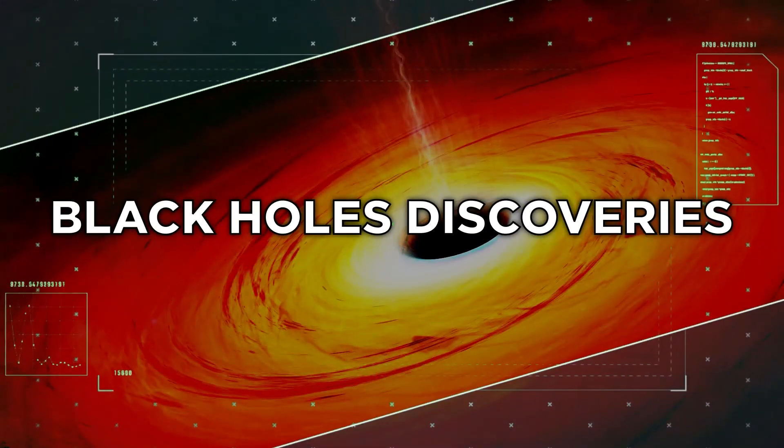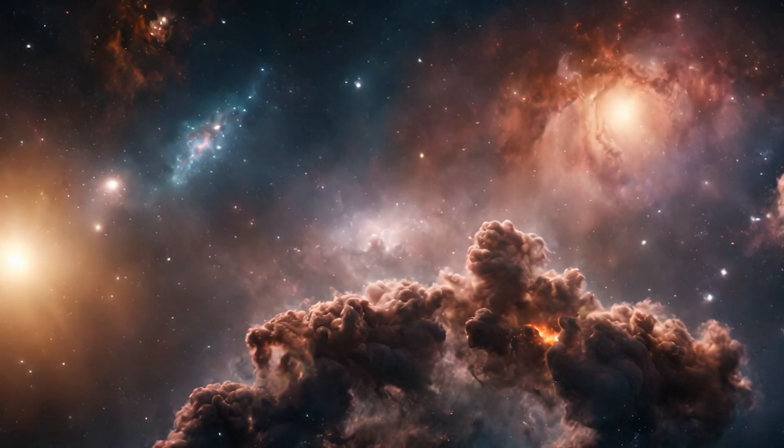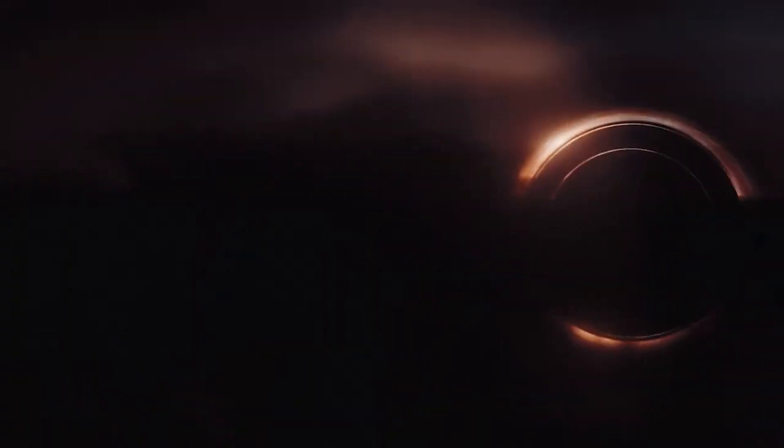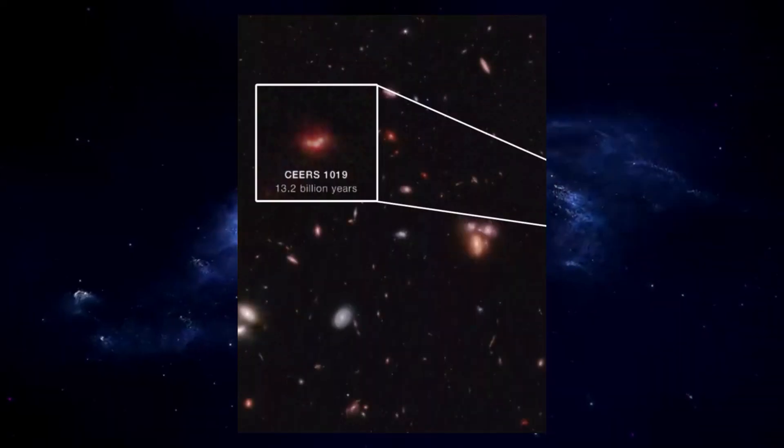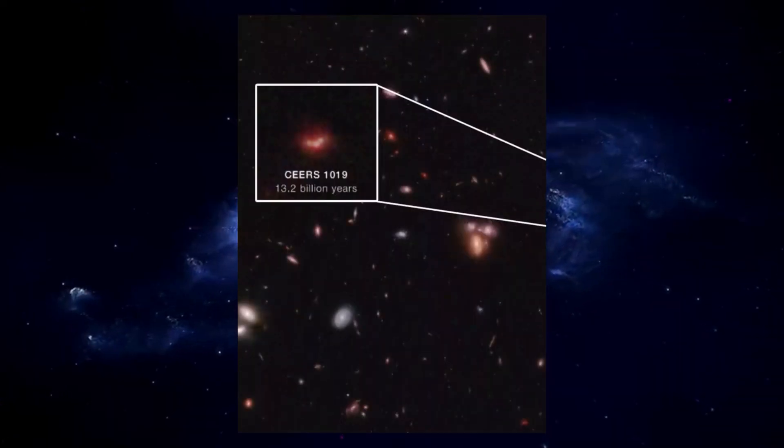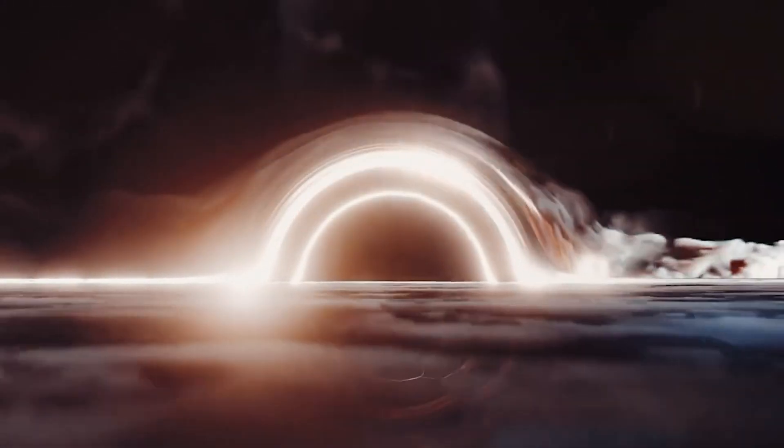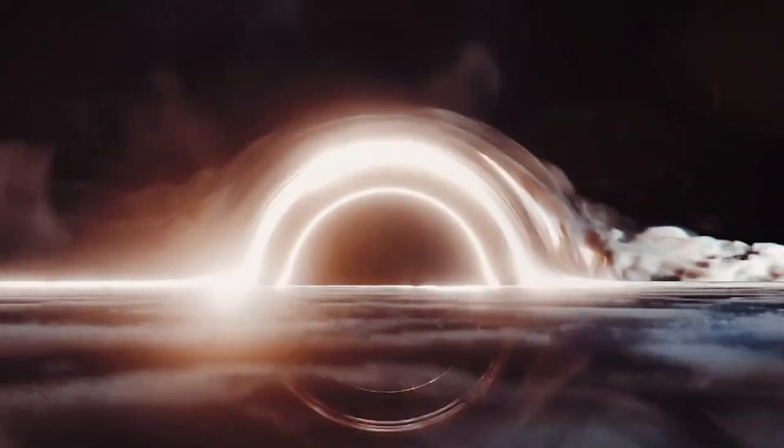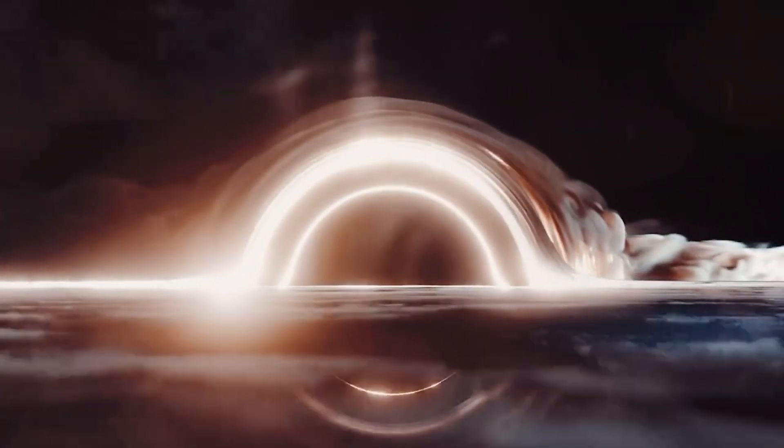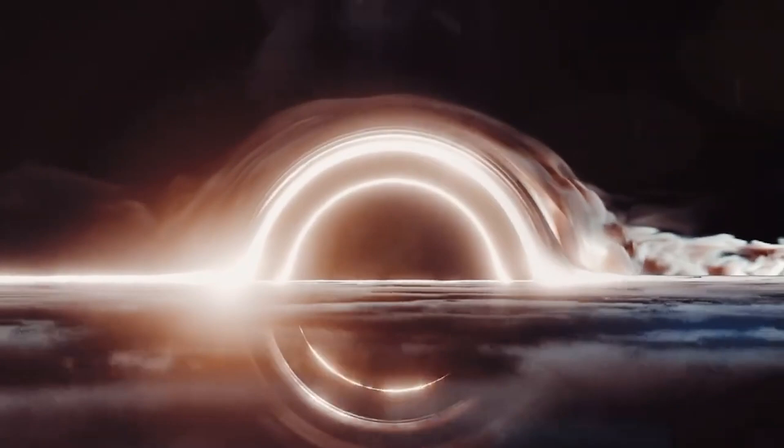Black hole discoveries. The James Webb Space Telescope not only uncovered astonishingly large ancient galaxies but also made remarkable discoveries involving massive black holes. The first, CEERS 1019, weighed in at 10 million times the mass of our Sun and was identified by the James Webb Space Telescope just 570 million years after the Big Bang, earning the title of the oldest black hole ever observed when it was discovered in April 2023.